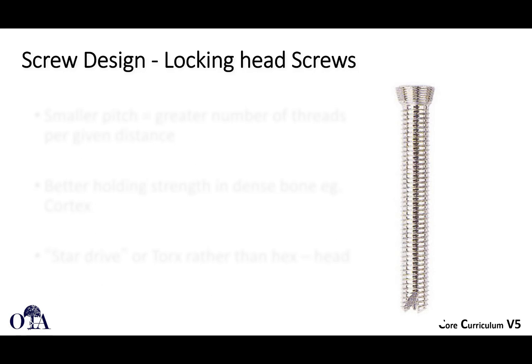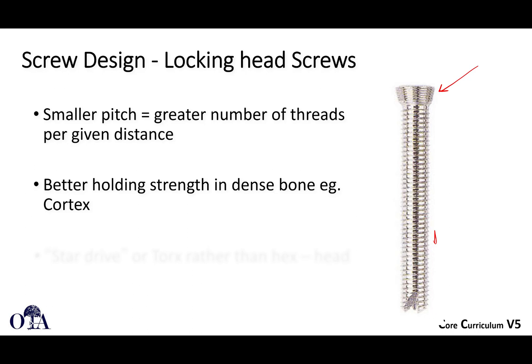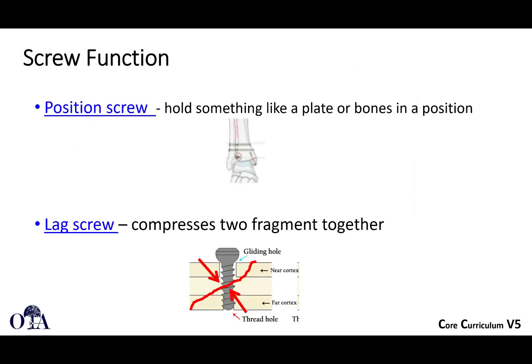Locking screws have threads on the head as well as the shaft. They also have a much smaller pitch with a greater number of threads per unit distance, making them very good for holding in dense bone. Most importantly, the threaded head locks into the plate. There are different techniques to achieve locking, and locking screw designs can vary, but this describes the traditional original design.